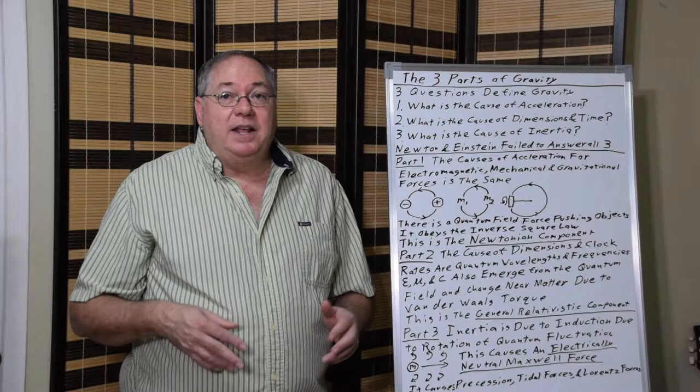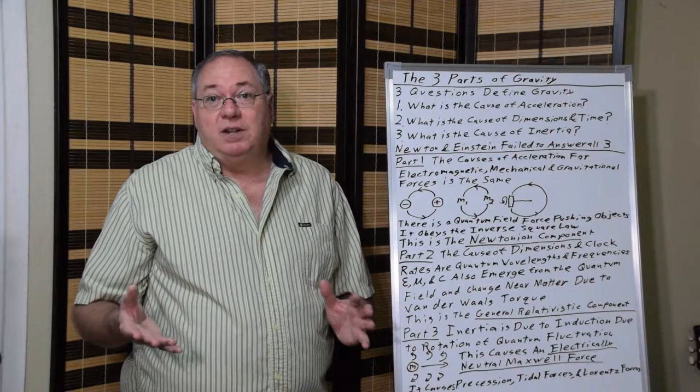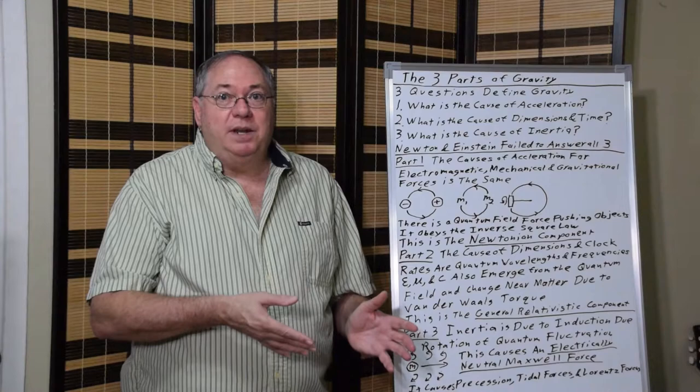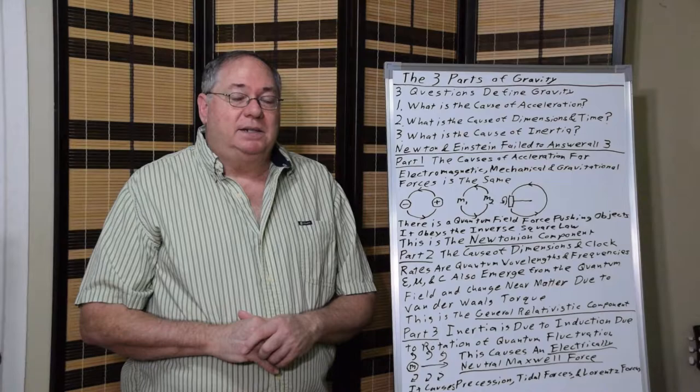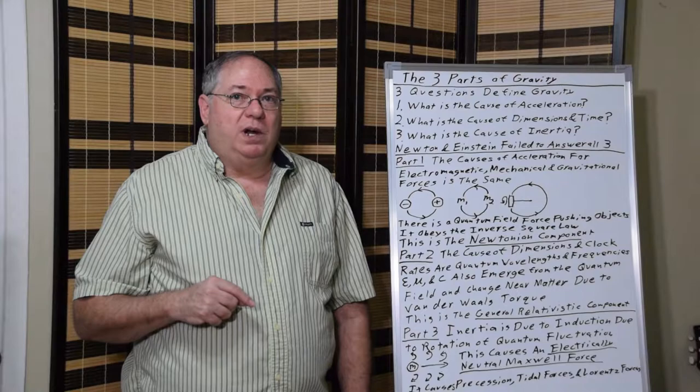At the same time, you get that permittivity, permeability, and the speed of light are emerging properties of the quantum field, which give you all your relativistic behavior and tell us the reason why photons behave the way they do. Because their behavior is based on the local permittivity and permeability, which is affected by the local mass, the local matter distribution. That gives us the second part.